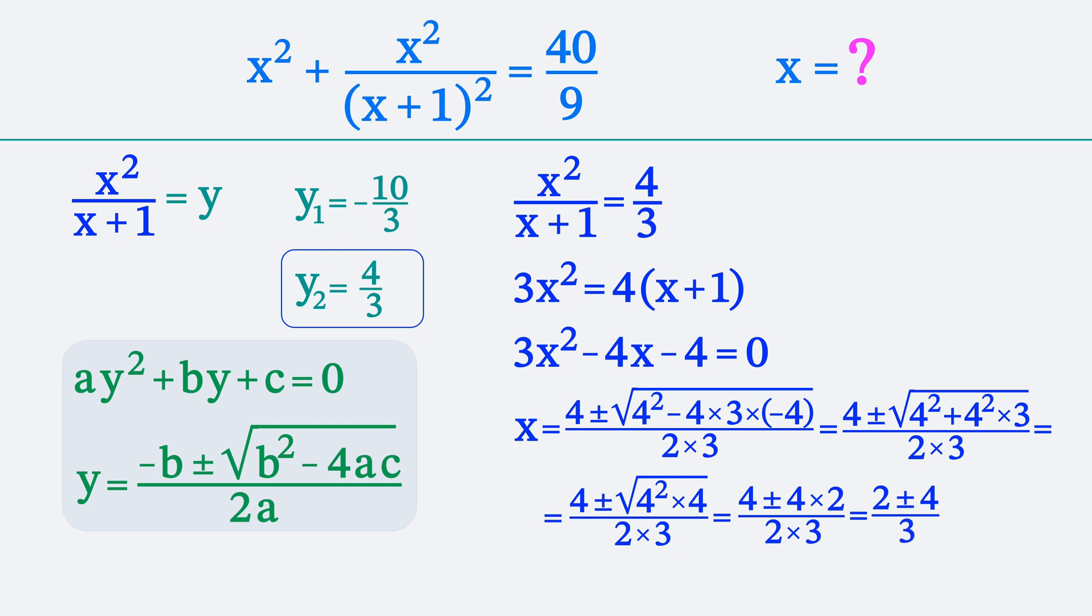We get that our original equation has two roots, either x equals 2 or x equals negative two-thirds.